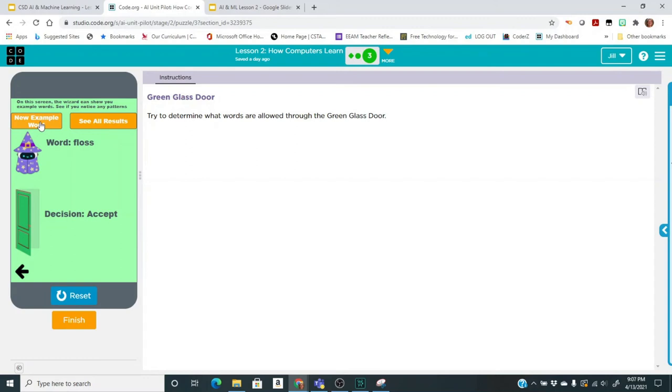So as you go through and click new example word lots of times, see if you can determine what is the rule. After you try several new example words, you can keep clicking new example word or you can try some yourself. If you think you have the rule figured out, you can try it. So do this for about five minutes or so and answer those first two questions on your lesson document.